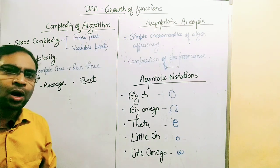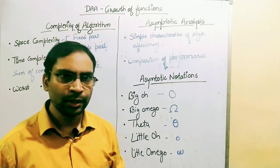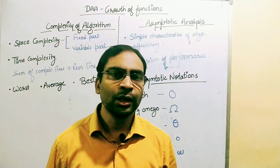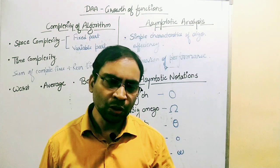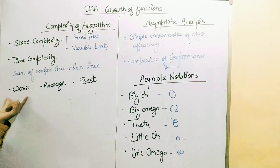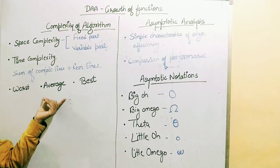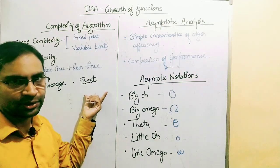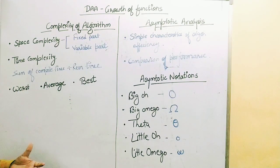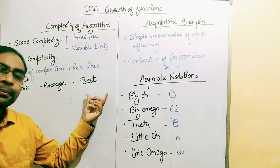We measure these performances in three categories, because an algorithm doesn't always perform the same — it may vary depending upon different types of inputs. We have three types of case complexities, especially if we talk about time complexity: worst case complexity, average case complexity, and best case complexity. Whenever we measure the complexity, we need to measure all three.